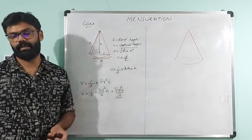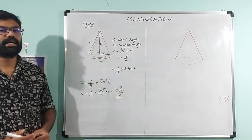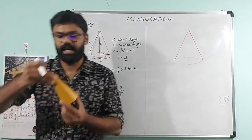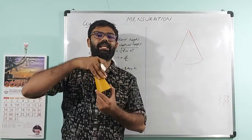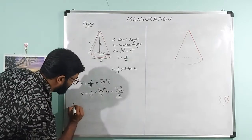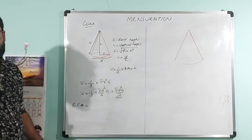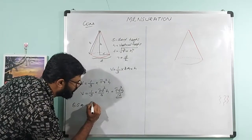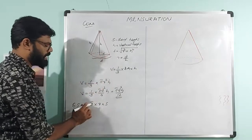This is the volume equation. Next is the curved surface area. The curved surface area is equal to π into r into slant height.